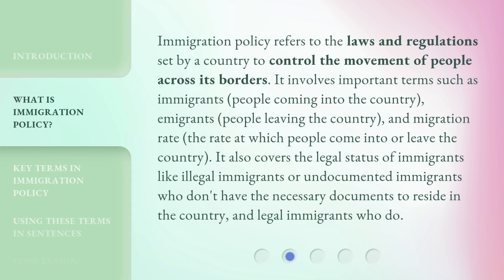Immigration policy refers to the laws and regulations set by a country to control the movement of people across its borders. It involves important terms such as immigrants — people coming into the country — emigrants — people leaving the country — and migration rate, the rate at which people come into or leave the country. It also covers the legal status of immigrants, like illegal or undocumented immigrants who don't have the necessary documents to reside in the country, and legal immigrants who do.